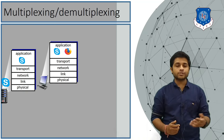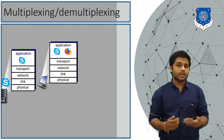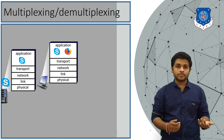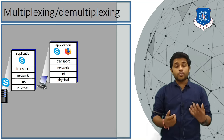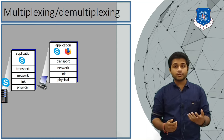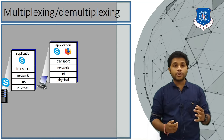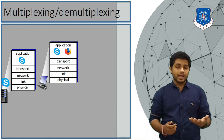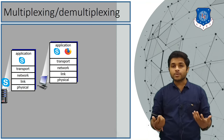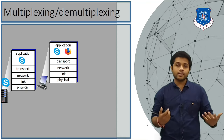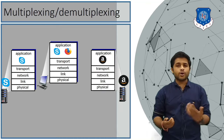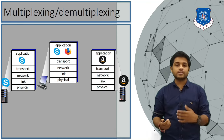So Skype also has layers: physical layer, link layer, network, transport, and the application layer. You want to open the Amazon website in the browser, so you type www.amazon.com. Amazon also has its own servers, far away from you, and those servers also have these five layers.